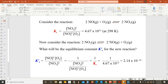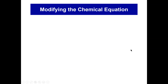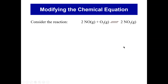Let us look at some examples of modifying a chemical equation and how that affects the Kc value. The Kc expression itself is dependent on how the equation for the reaction is written. Let's look at this particular reaction — the reaction between nitrogen monoxide and oxygen to form nitrogen dioxide. We have to always ensure that the equation is balanced, and it is balanced in this case.